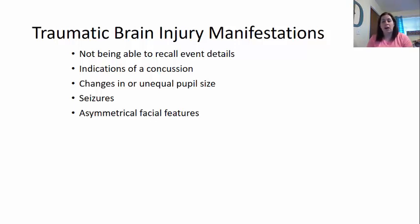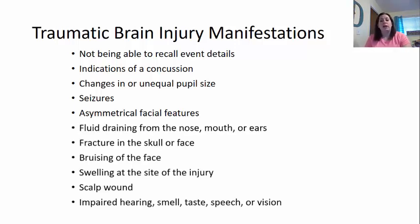Seizures may be a complication. Asymmetrical facial features — if one side of the brain is affected more than the other, the face may start to droop. Fluid draining from the nose, mouth, or ears. Fracture in the skull or face. Bruising of the face. Swelling at the site of the injury. Scalp wound. Impaired hearing, smell, taste, speech, or vision could all be different manifestations.